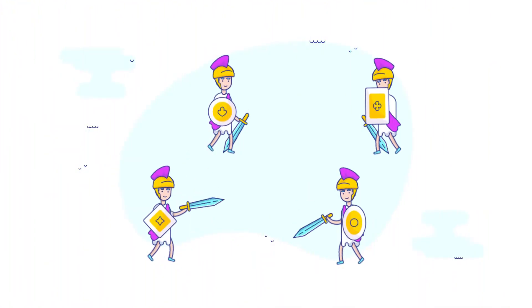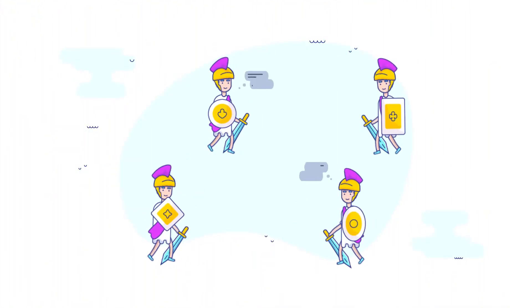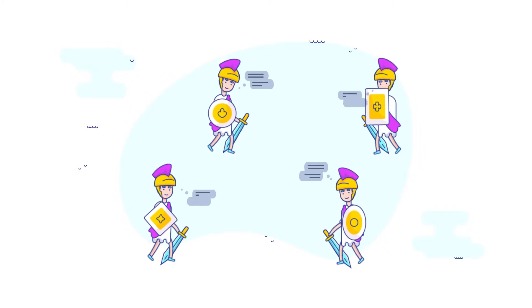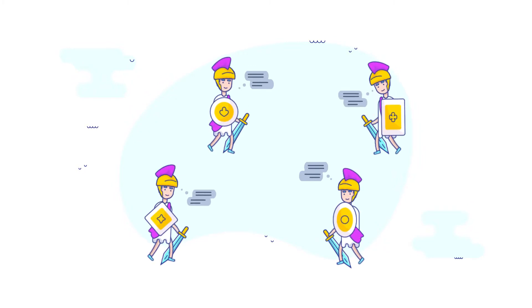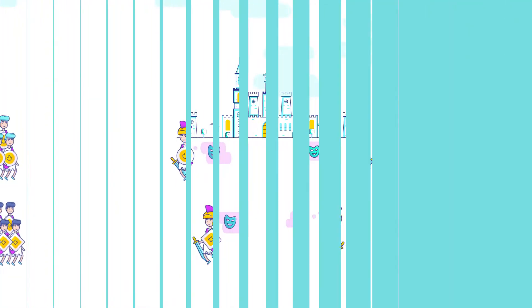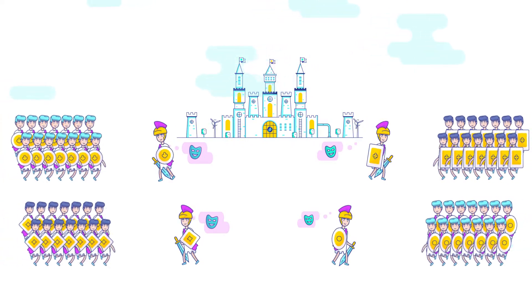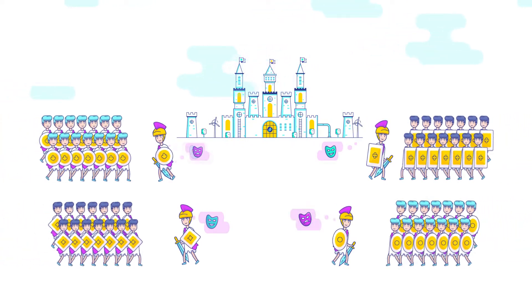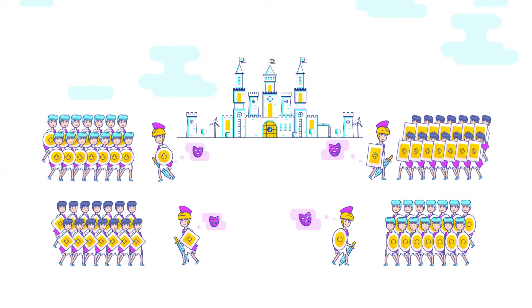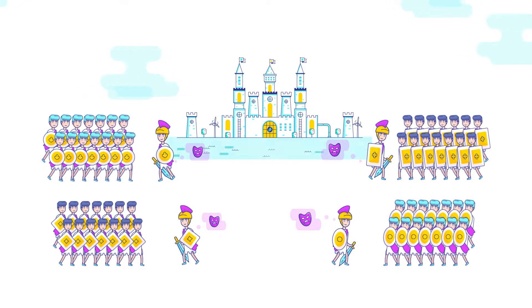To coordinate, the generals must relay a message instructing when to act, but only a simultaneous attack ensures victory. The problem is that the generals do not know who is loyal and who is a traitor, so how can the generals reach a collective decision and conquer the castle?